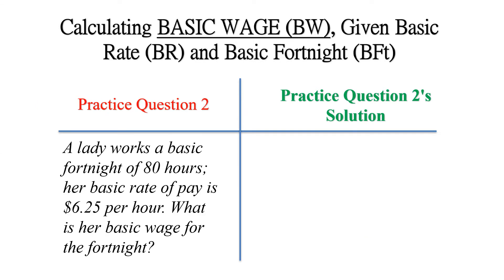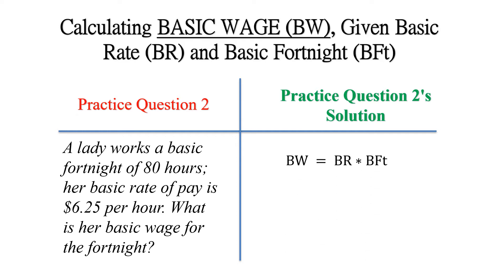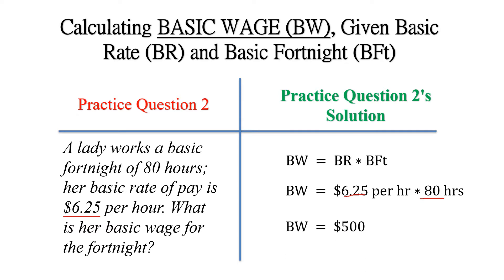Here is another practice question. A lady works a basic fortnight of 80 hours. Her basic rate of pay is $6.25. We want to find the basic wage for that fortnight. That is $6.25 multiplied by 80 hours, which gives us $500 as the basic wage.